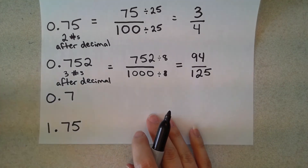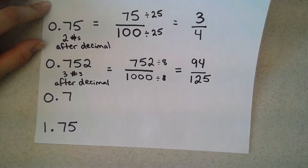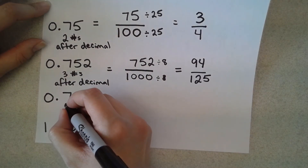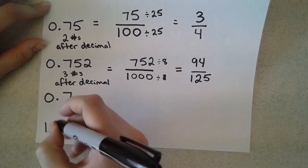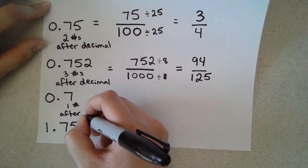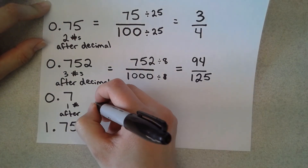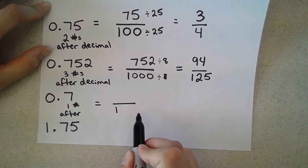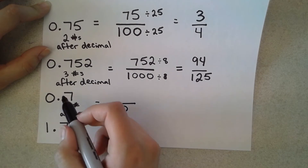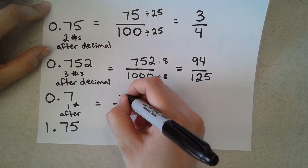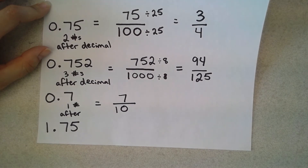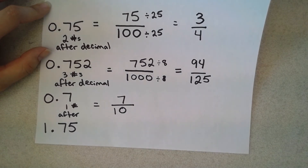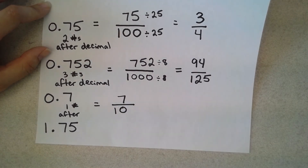Next example: 0.7. There is one number after the decimal, so the bottom number is going to be 1 with one zero — just 10. I put the 7 on top, giving me 7 over 10. Can I reduce it? No — no number goes evenly into both 7 and 10, so I'm all done. 0.7 converts to 7 over 10.